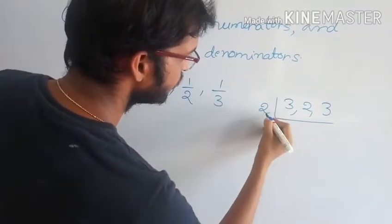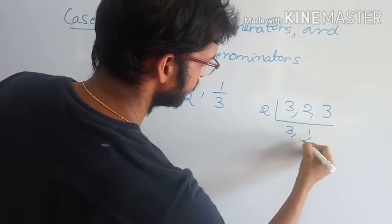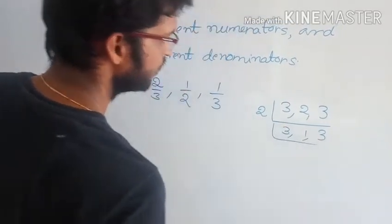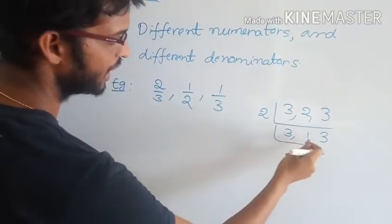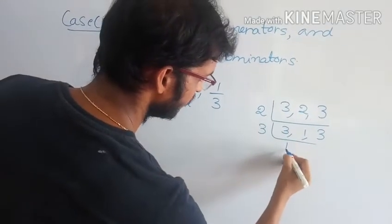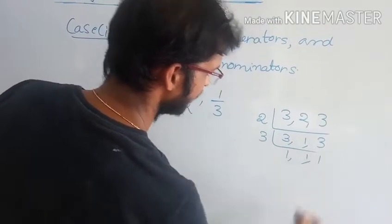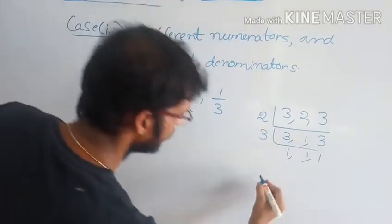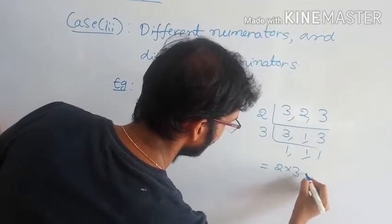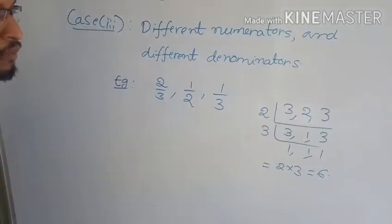Take the LCM of 3, 2, and 3. Starting with 2 — 3 is not divisible by 2, so bring it down. Then divide by 3: 3, 1, 3. LCM equals 2 into 3 = 6. So 6 is the LCM.